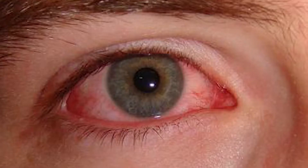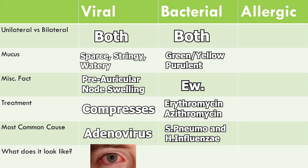The most common cause of viral conjunctivitis is adenovirus. For bacterial conjunctivitis, it's also unilateral and can progress to bilateral, but the discharge is much more purulent — pus-like and thick, with a greenish-yellow color. You treat it with antibiotics like erythromycin and azithromycin. The most common causes are Strep pneumo and H. influenzae.